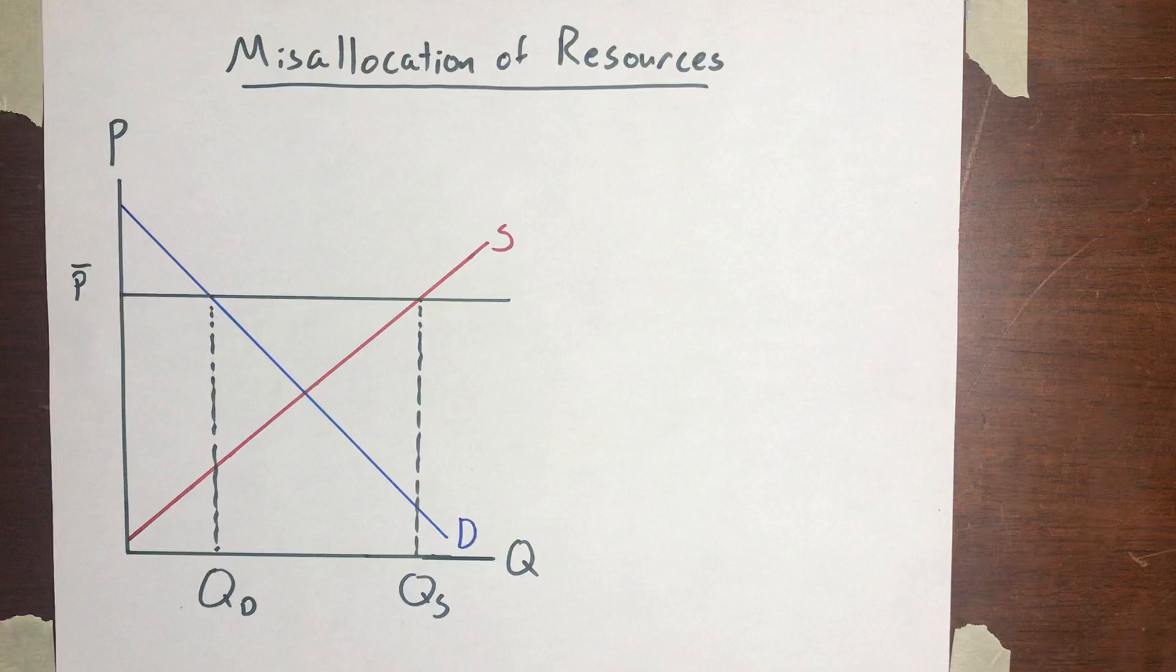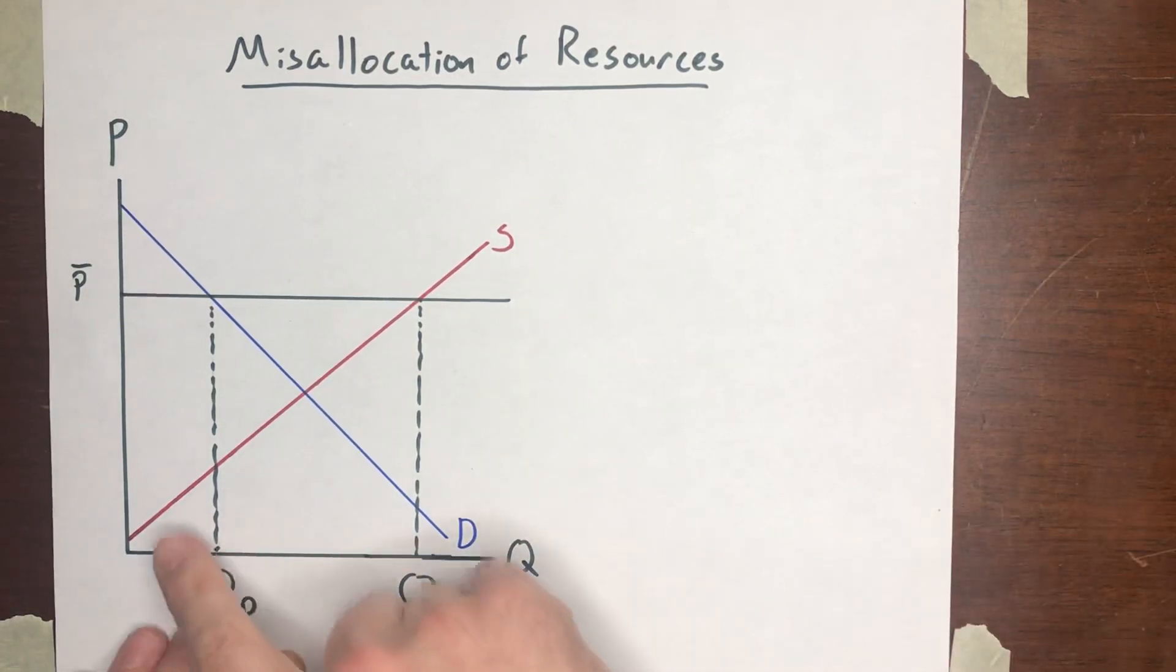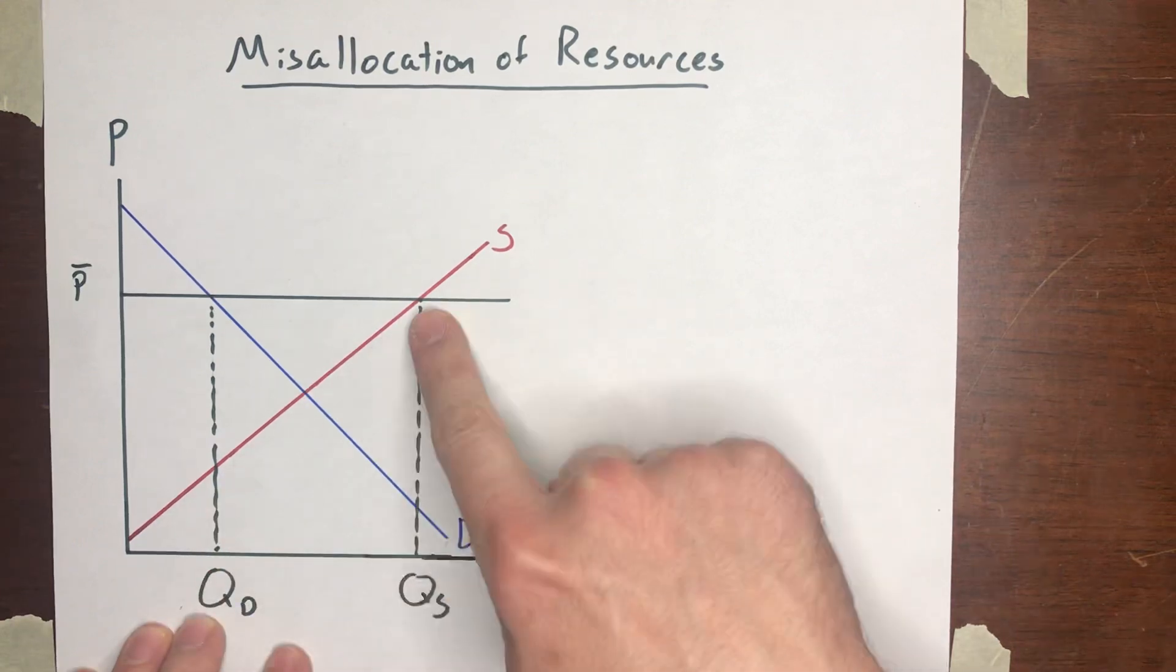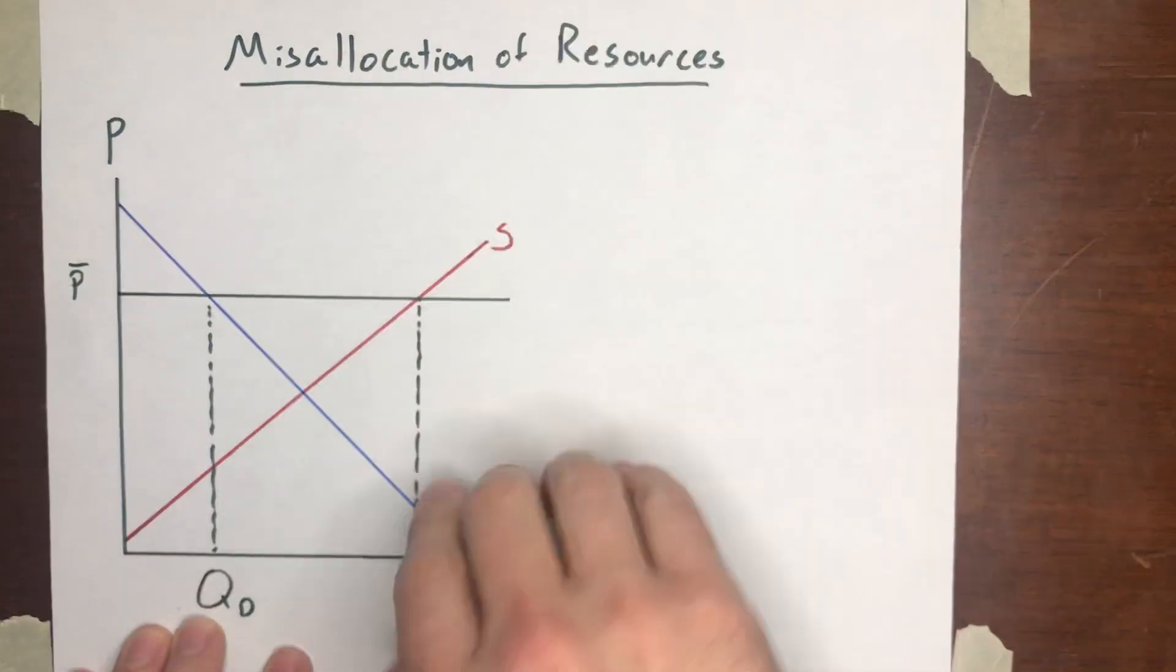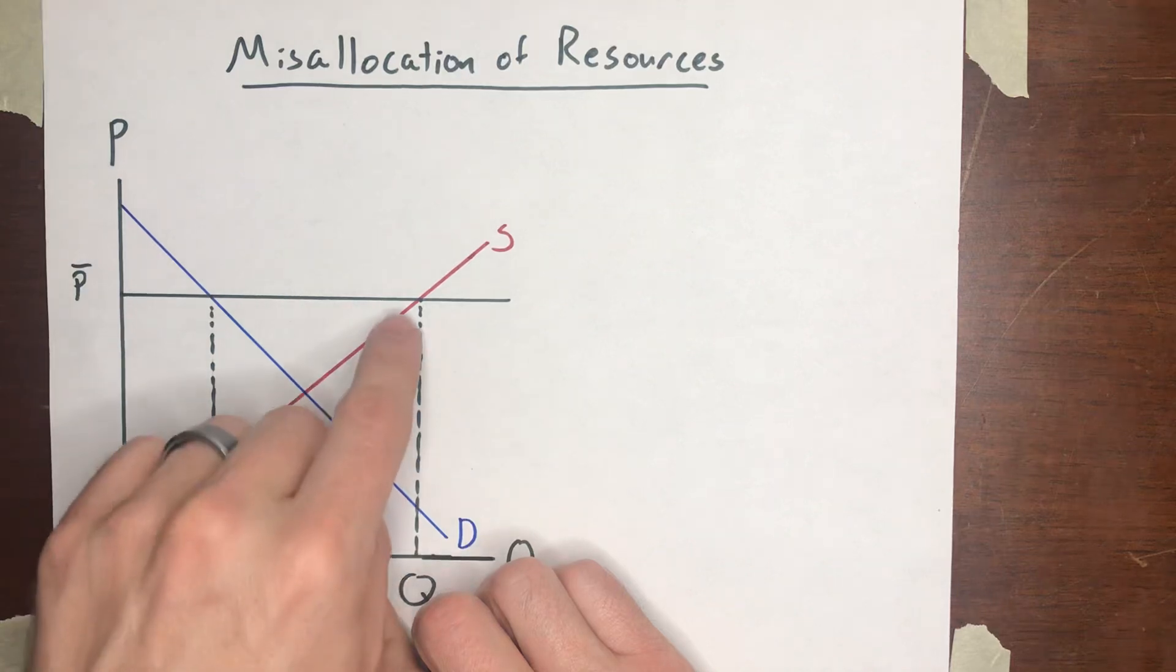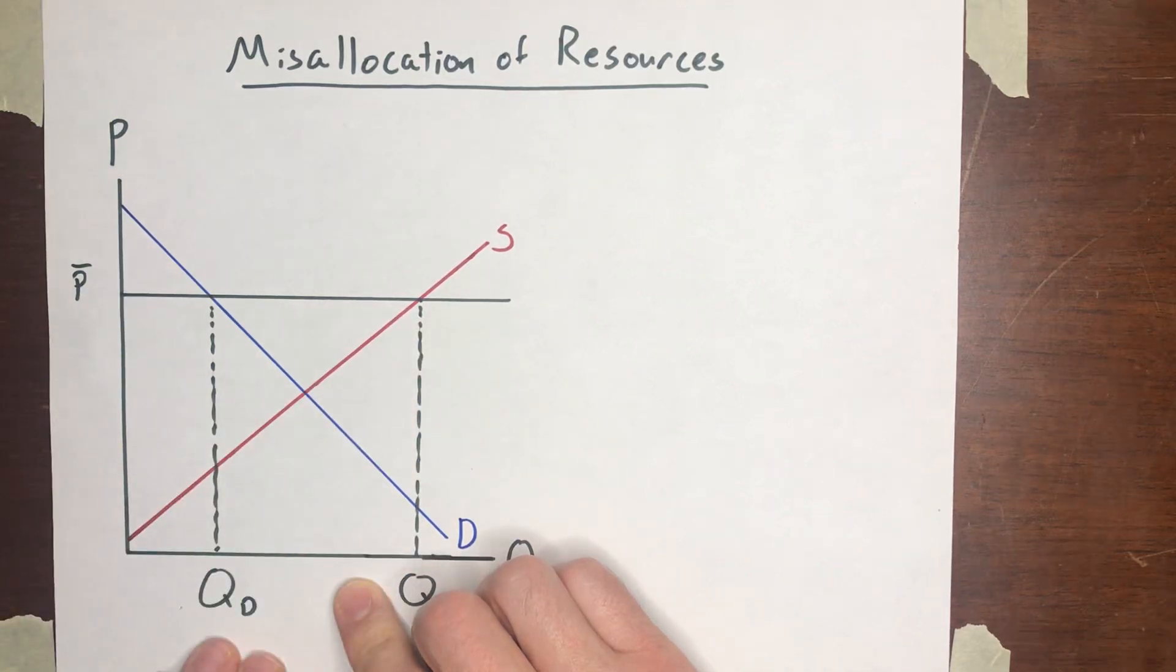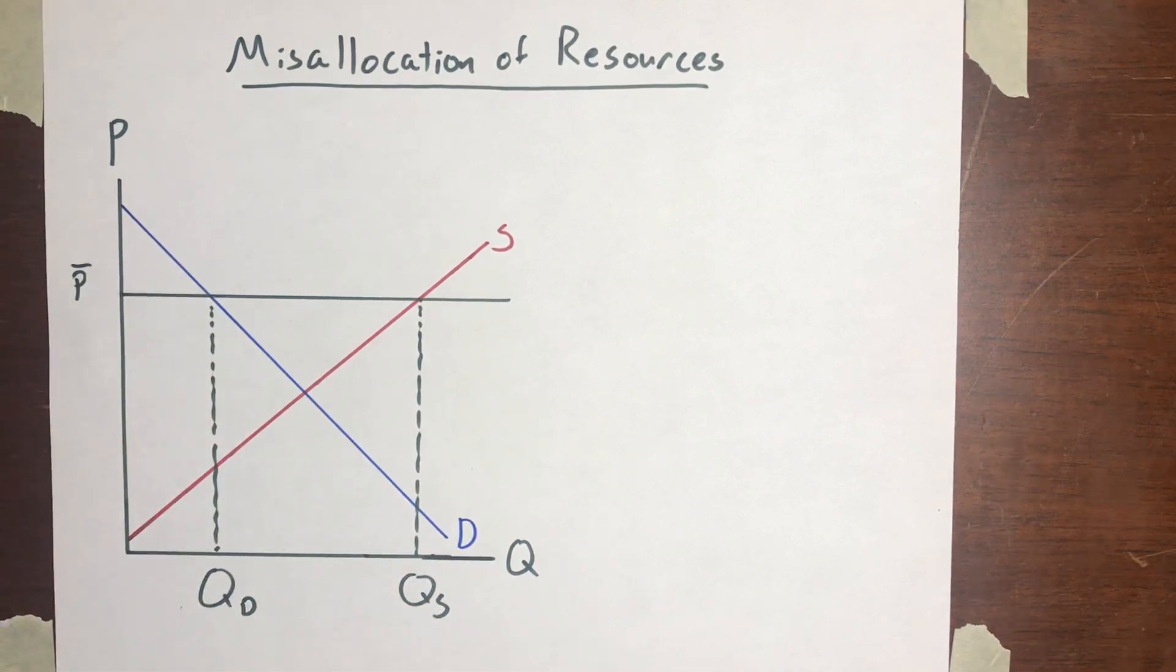So the most extreme version of this would be if you imagine the sellers just randomly being allocated sales. Customers just randomly go out and pick a seller, and so the guy with this low cost is just as likely to make a sale as the guy with this high cost. What would happen under those circumstances? Now, they don't go over this in your textbook and they don't talk about it in the MRU videos either, but for completeness, since we discussed this on the buyer side, I wanted to talk about it on the seller side as well.